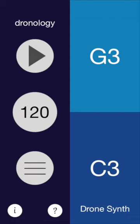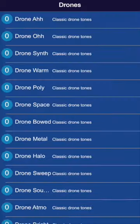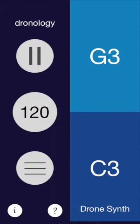Now let's demo the major features. The simplest usage is a static drone. The settings button brings up the list of available presets. Scroll to the top for the static presets and touch one to select it. This plays two drone tones. It's useful for practicing intonation, scale studies, and open improvisation.